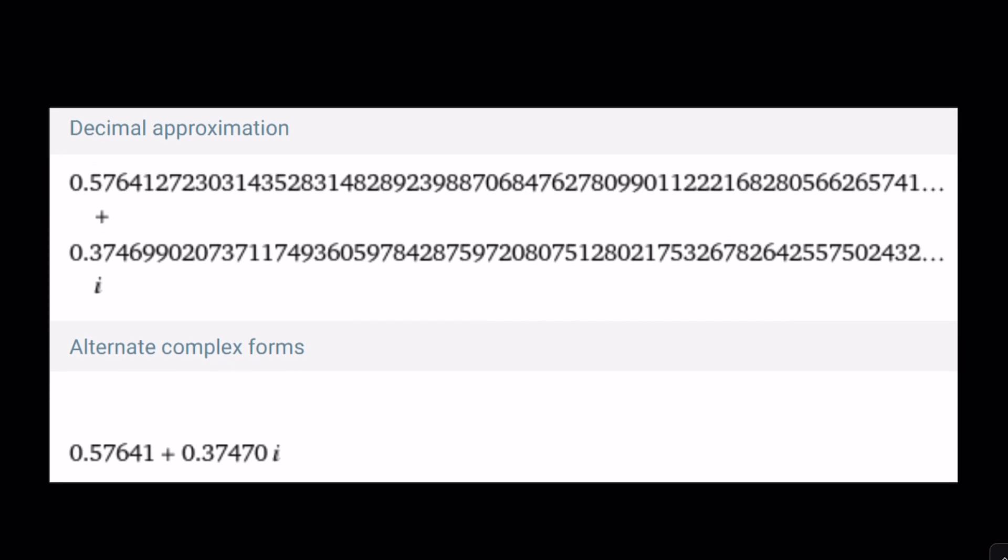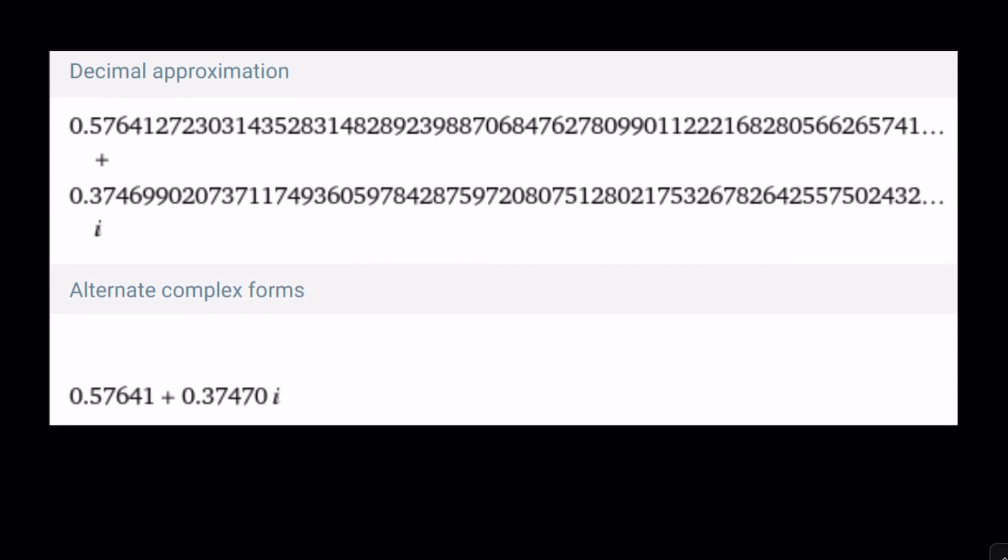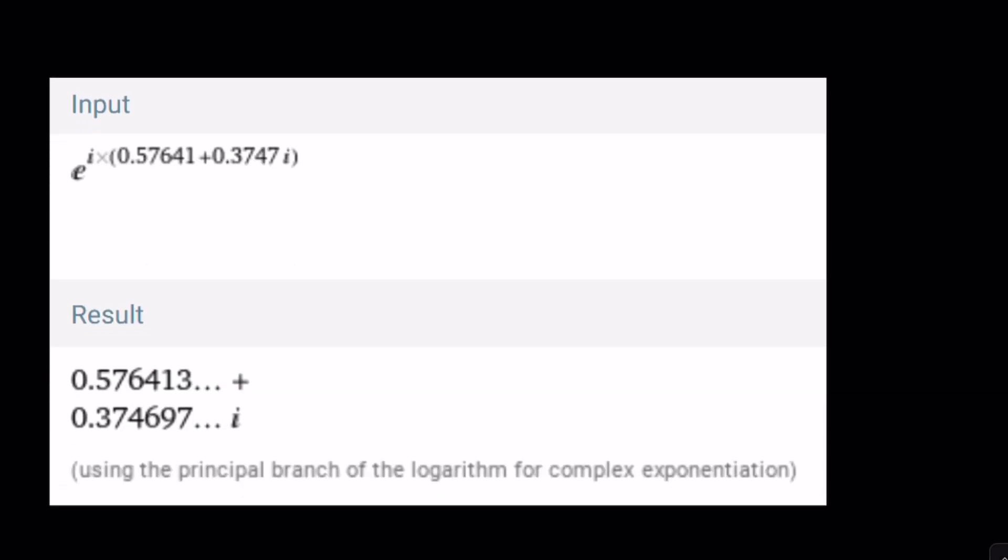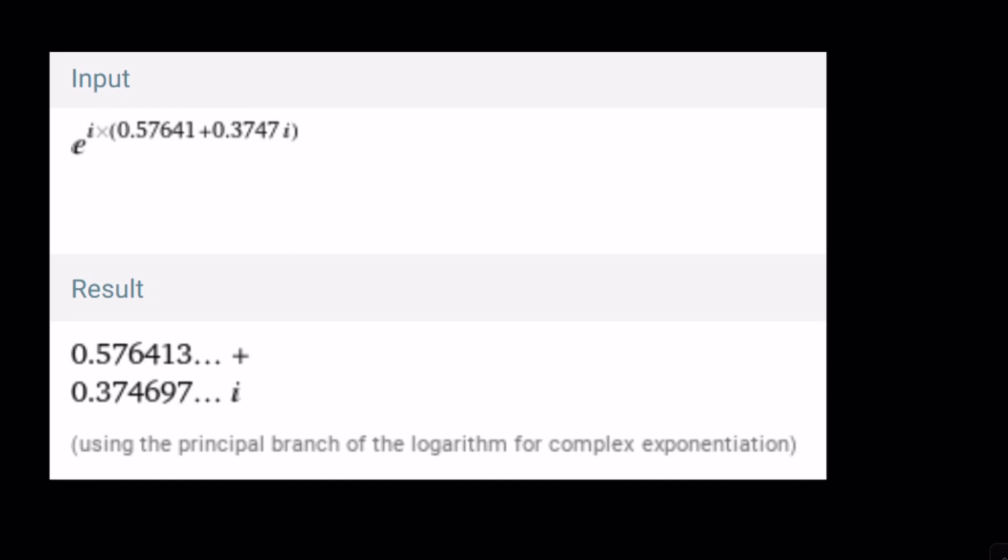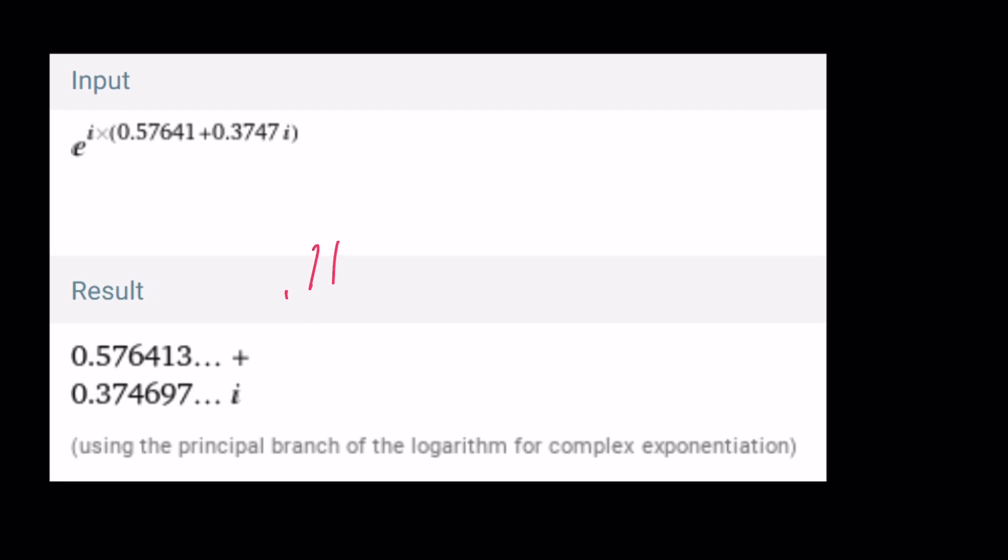We got Lambert's W function of negative i times i. And that's what it is. Approximately 0.57641 plus 0.37470i. And what happens if you plug it into e to the iz? You're going to get z back. So, it's that very special complex number that gives us this relationship. And this brings us to the end of the video.